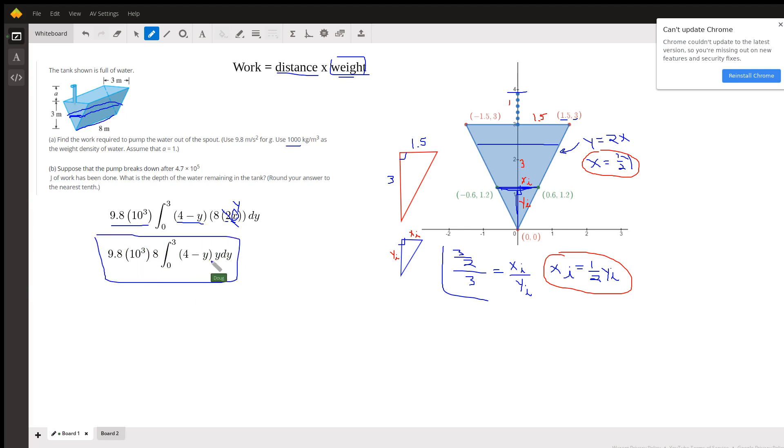So to evaluate that, you know, distribute this y here. Find the antiderivative. Evaluate from 0 to 3. And then multiply by this number right here. That'll give you the work. I think it's like over 700,000 joules of work.